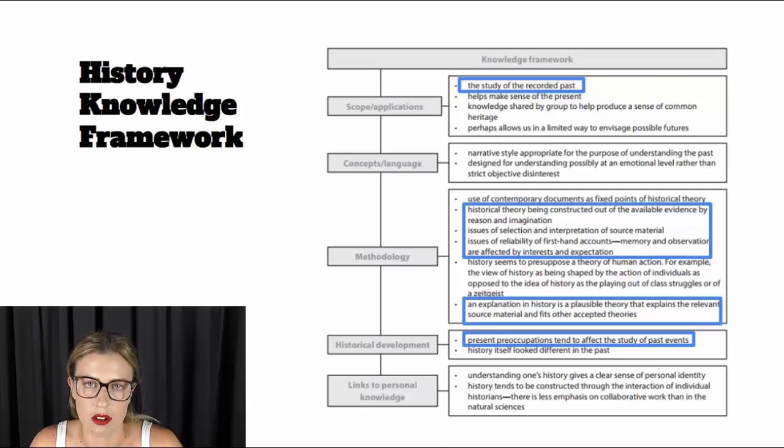So here is the History Knowledge Framework and I wanted to point out some particular elements that are important to understanding the strengths and weaknesses of history as an area of knowledge. Firstly, if we're looking at the scope and applications, you can see that history is the study of the recorded past. And please make note of the recorded past. It's not actually the study of every single thing that happened in history and has happened in the past. It's what we have actually recorded.